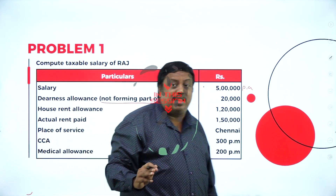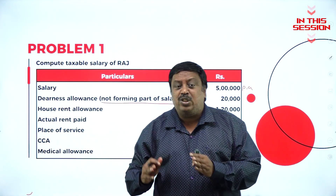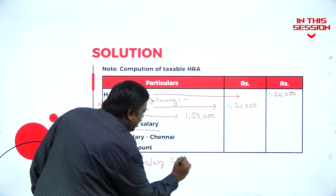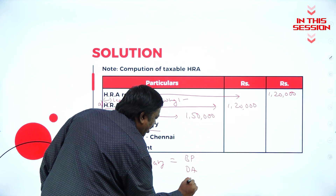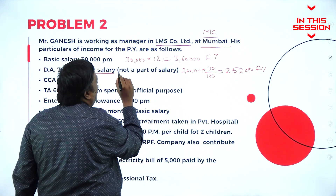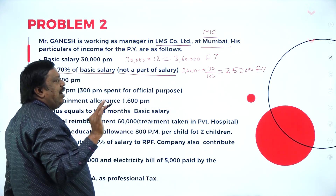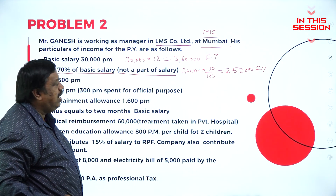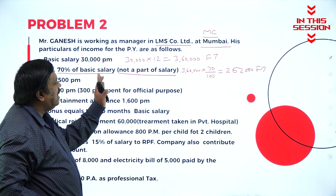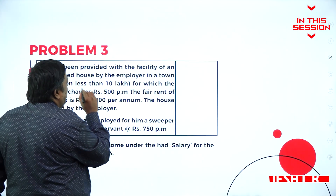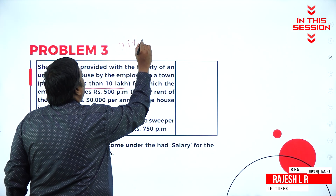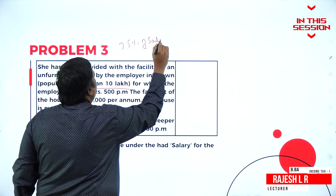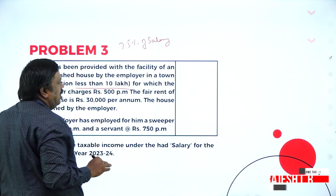Wherever the term salary comes, for that we should not consider DA. Salary means basic pay. DA and commission is not part of salary — meaning for calculation of salary, wherever it is necessary, we should not consider DA. So whenever they are mentioned, less than 10 lakh, 7.5 percent of salary is to be considered for the calculation.